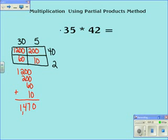The second way to solve this problem, using the partial products way, is to write it vertically. So I'm going to write 35 times 42.